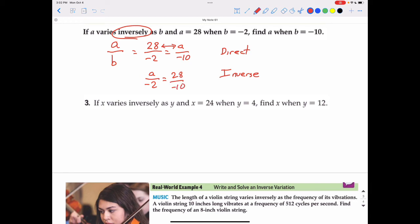And that's the initial setup. Then we cross multiply. So that means negative 10a will equal negative 56. Divide by negative 10, and a is going to equal positive 5.6.